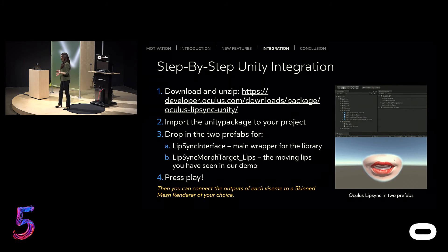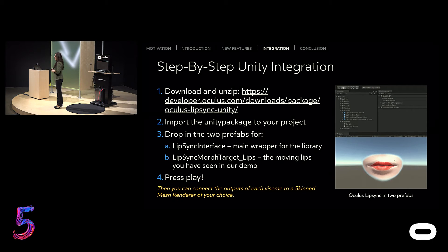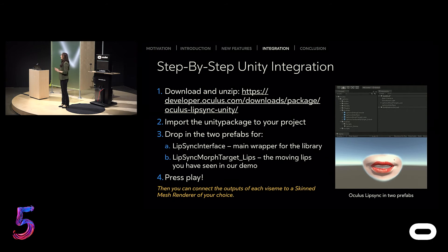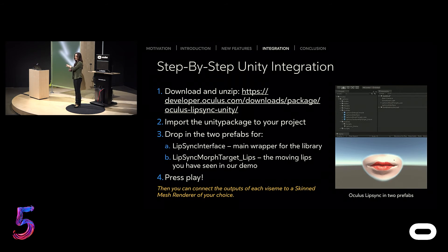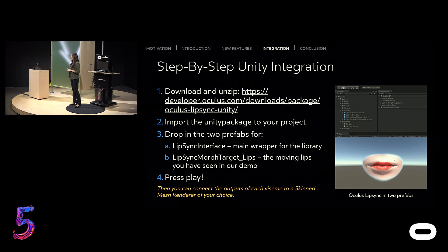At the end of my talk, me and my team will walk around and get you started on the Unity integration. We have chosen Unity because it's the most mature integration, and very soon you'll get access to all the packages online on the download site. The package installation is quite easy — you download and unzip, create a project, import the Unity package we provide, then drop in two prefabs: the Lip Sync Interface and Lip Sync Morph Target Lips. Then press play — voila — and you'll get the animation.